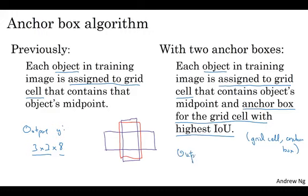And so now, the output Y is going to be 3 by 3 by 16, because as you saw on the previous slide, Y is now 16 dimensional, or if you want, you can also view this as 3 by 3 by 2 by 8, because there are now two anchor boxes and Y is 8 dimensional. And dimension of Y being 8 was because we have three object classes. If you have more objects, then the dimension of Y will be even higher.